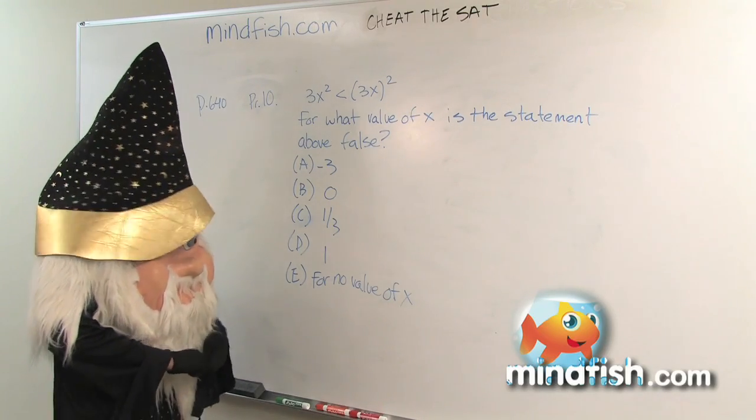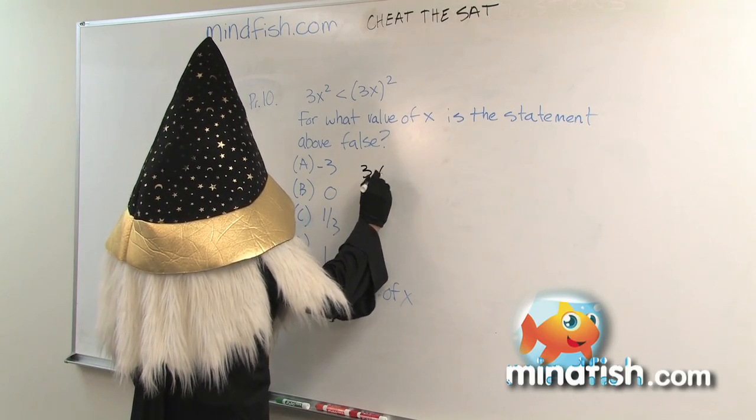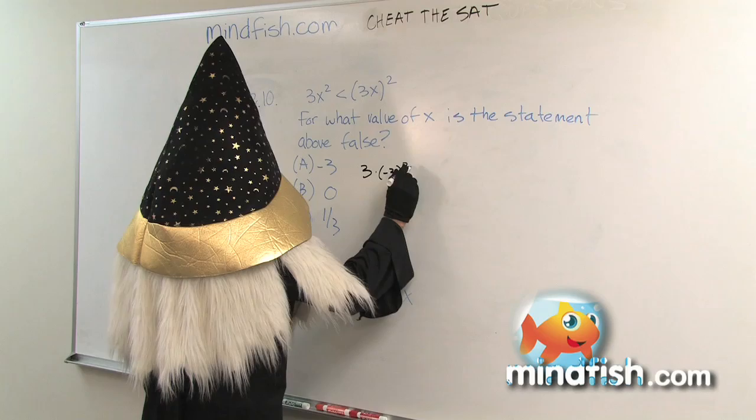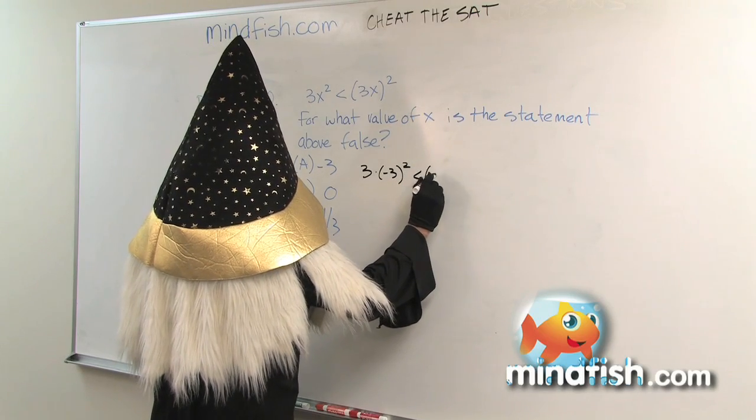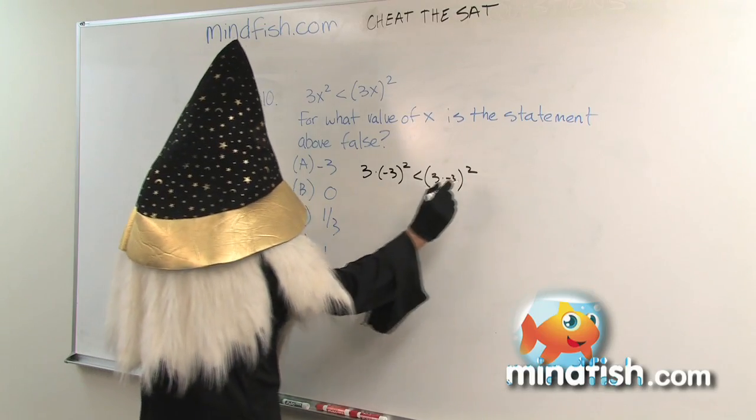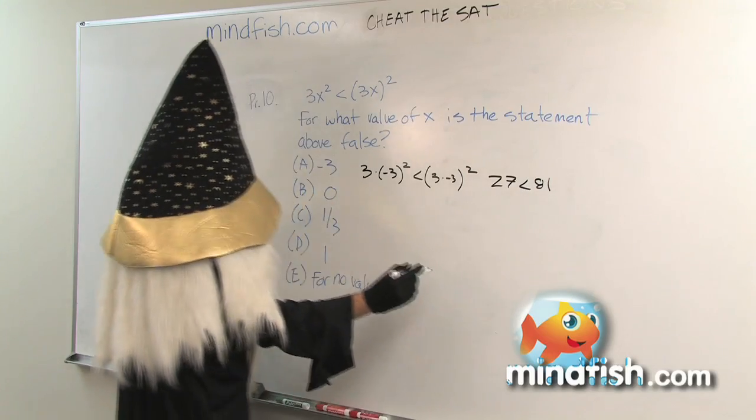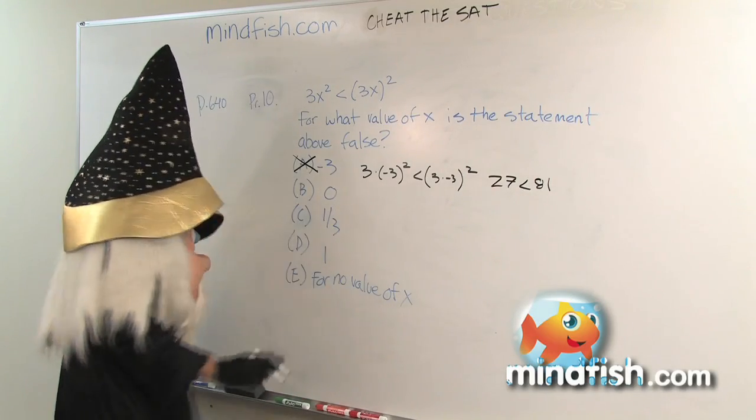We start with negative 3. We put in negative 3 into this and we get 3 times (-3)² is less than (3 times -3)². This is going to turn into 27 is less than 81, and that is true, so this answer does not work.